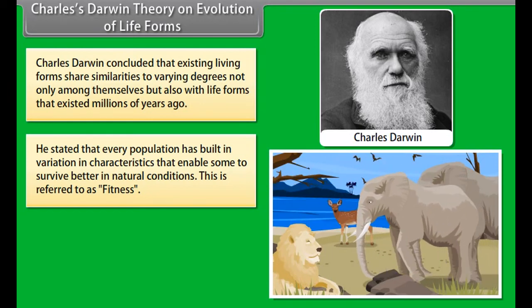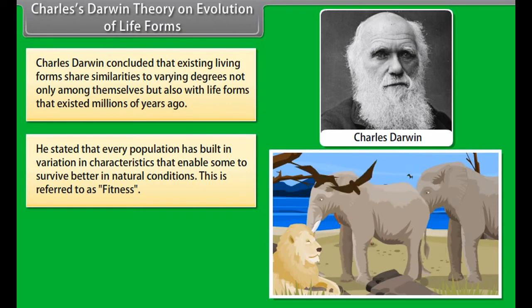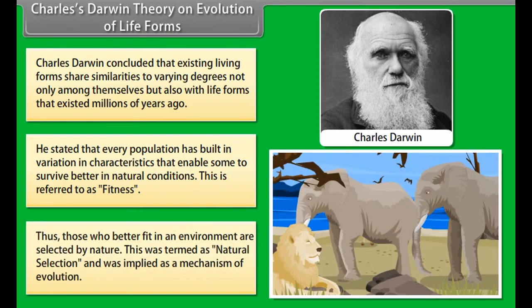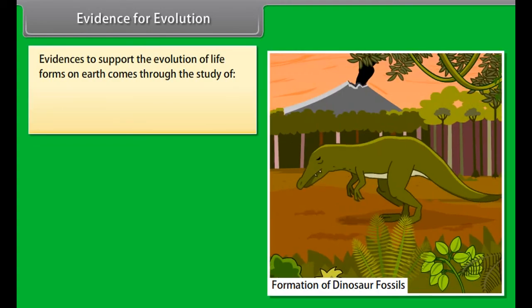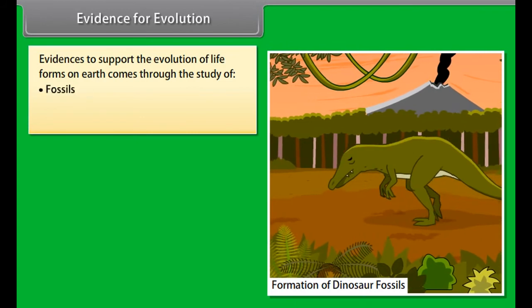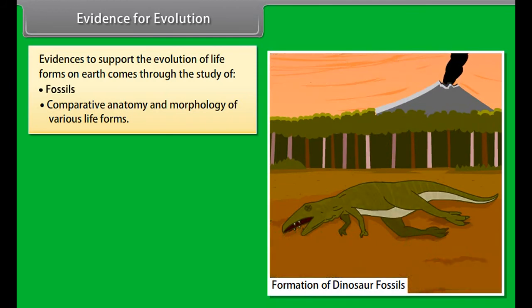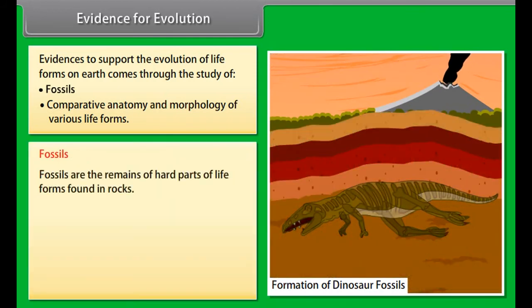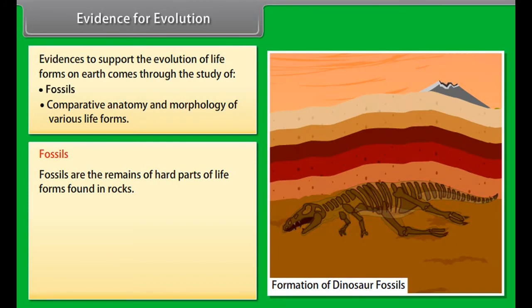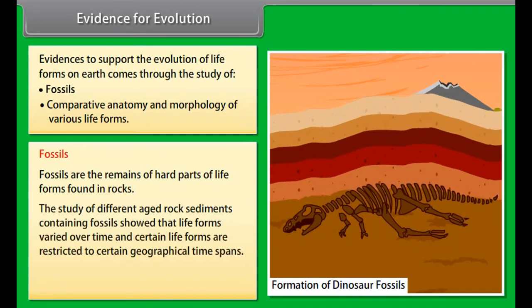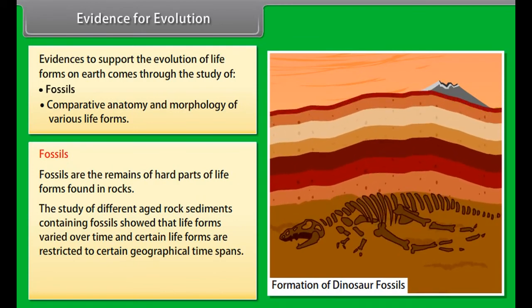Charles Darwin concluded that existing living forms share similarities to varying degrees, not only among themselves but also with life forms that existed millions of years ago. He stated that every population has built-in variation in characteristics that enabled some to survive better in natural conditions. This is referred to as fitness. Thus, those who better fit in an environment are selected by nature. This was termed as natural selection and was implied as a mechanism of evolution.